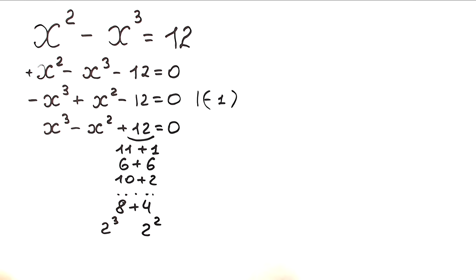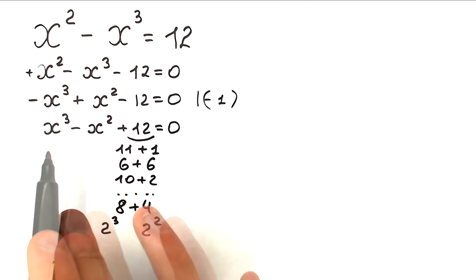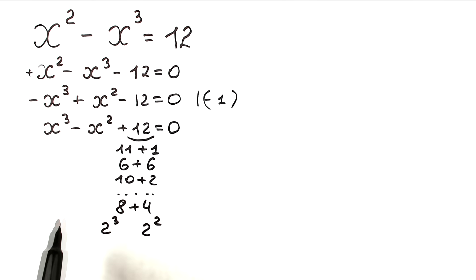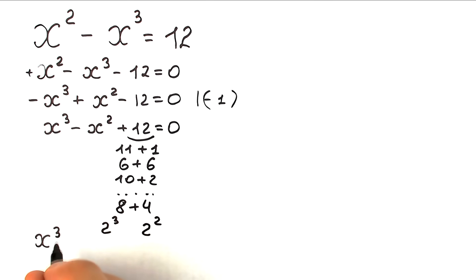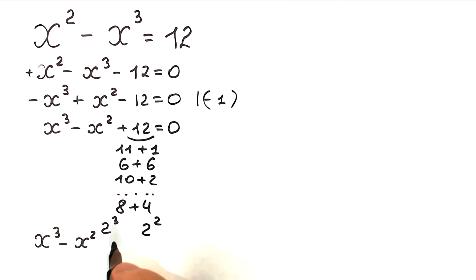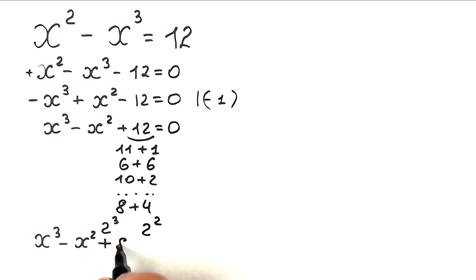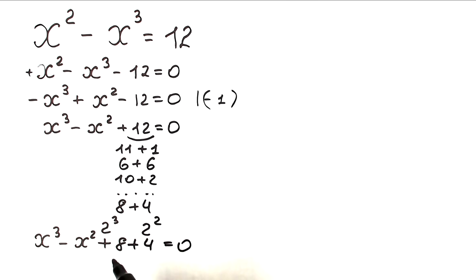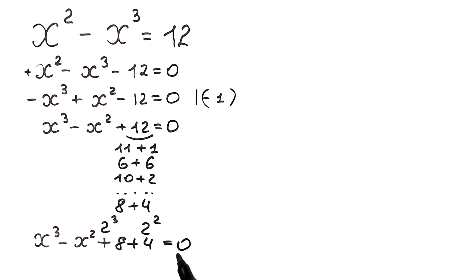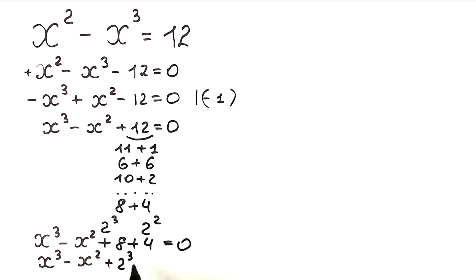Why? Because 8 equals 2³ and 4 equals 2². This is a really important expression for us, because now we can write this 12 as a cube and a square, and then combine them. So we have x³ minus x² and instead of 12 we write 8 plus 4 — so plus 2³ plus 2² equals 0.